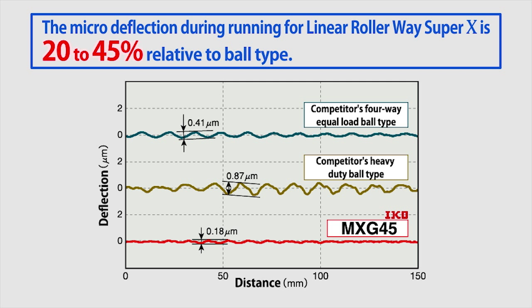Moreover, it can be seen that IKO Linear Rollerway Super X shows none of the large deformation of the other company's ball type and almost no attitude changes.